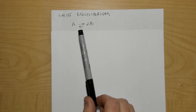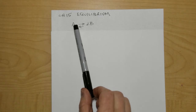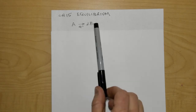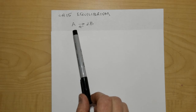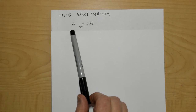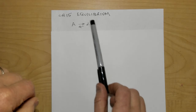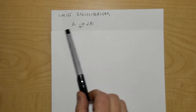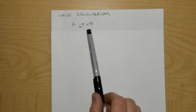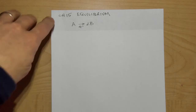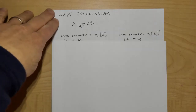From now on, forevermore, we're always going to write two arrows — one going from left to right, and one going from right to left. We still will call these reactants and products, because the left side is always called reactants and the right side always called products. But the reaction is reversible.